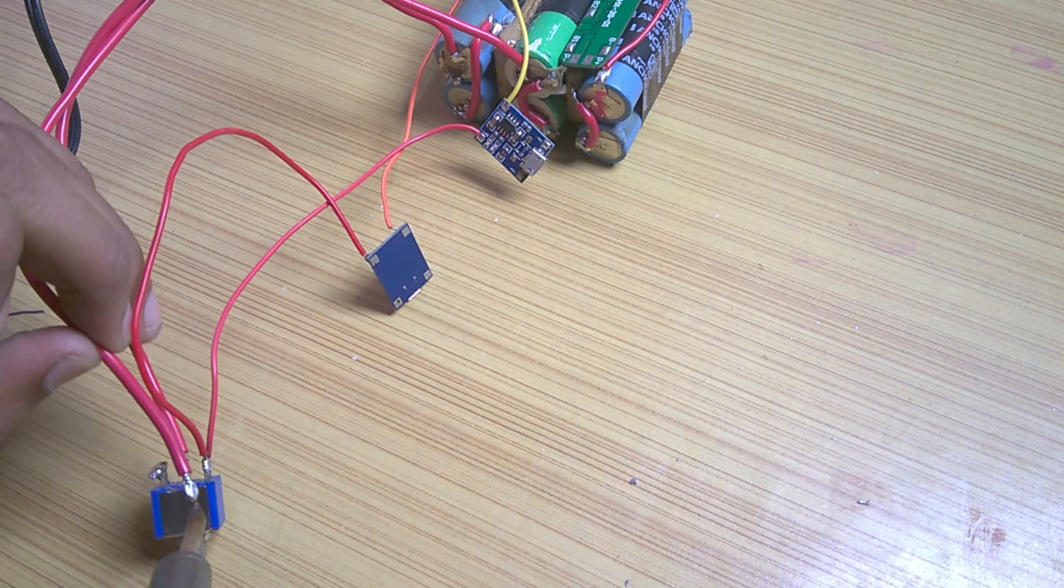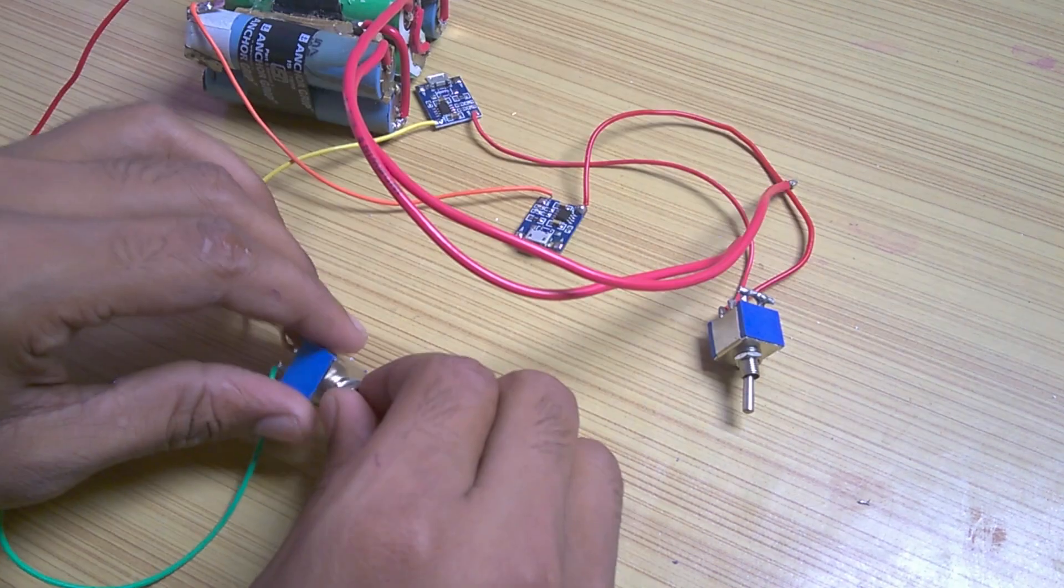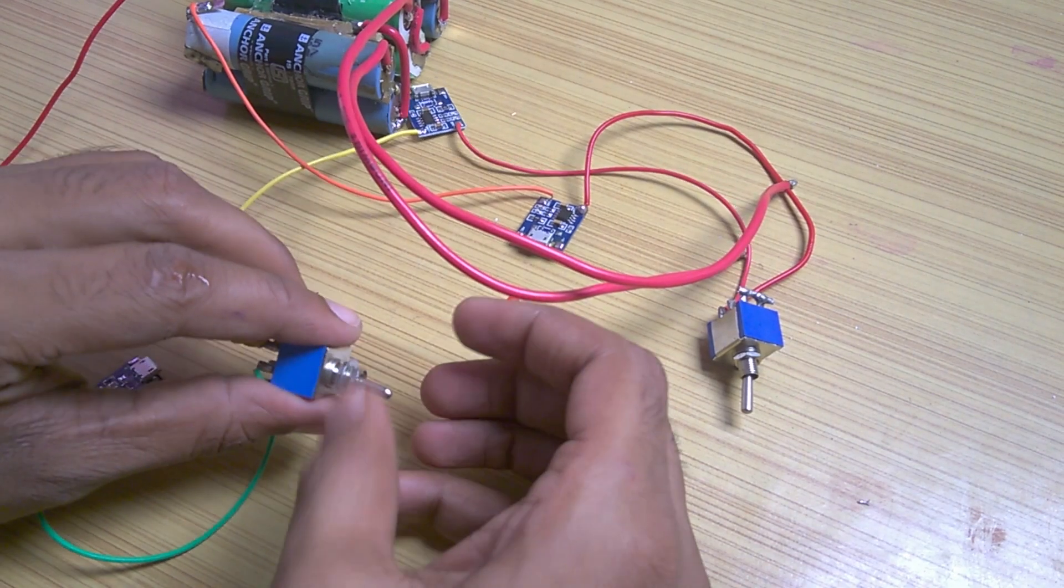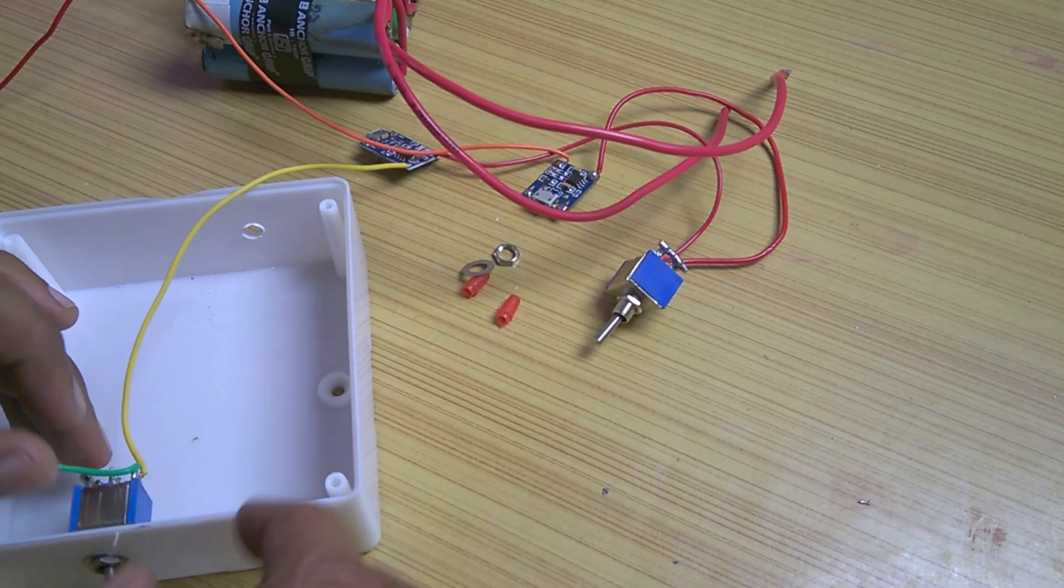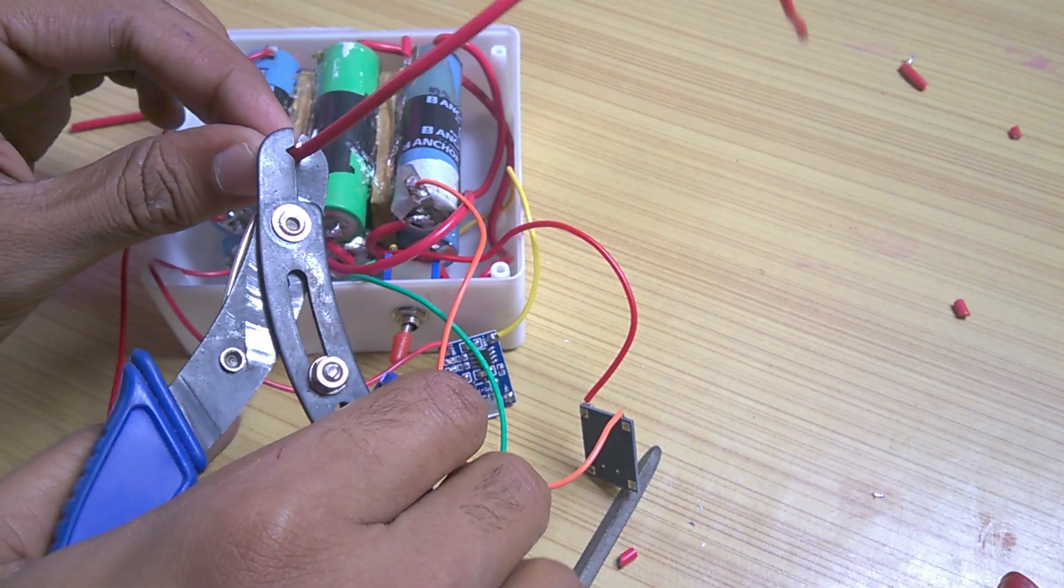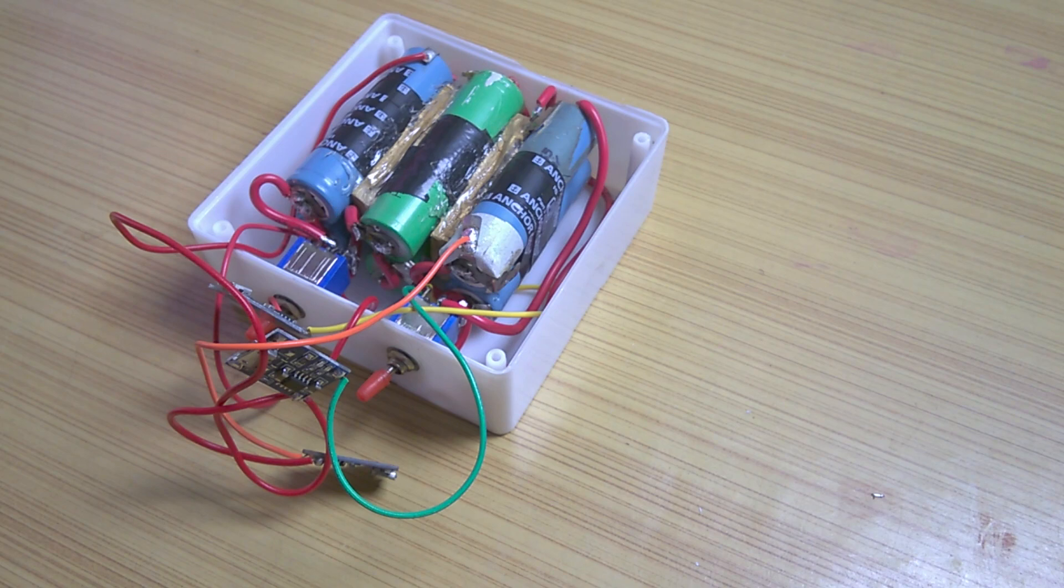Then I desoldered all the four wires from four poles of the two DPDT switches. I removed the nuts from the switches, put it inside the box and then tied them from the outside. I shortened every wire, stripped the insulation and then soldered it to their respective places.